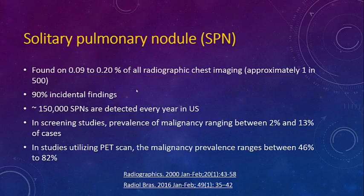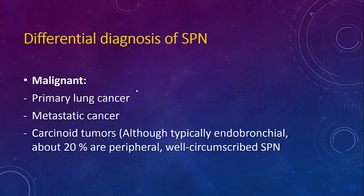Overall, solitary pulmonary nodules are found in about 0.09 to 0.2 percent of all chest imaging, approximately 1 in 500. About 90 percent of the time it is incidentally found, and about 150,000 nodules are detected every year in the United States. Screening studies showed a prevalence of malignancy ranging between 2 to 13 percent, rising to about 46 to 82 percent in high-risk nodules assessed by PET scan.